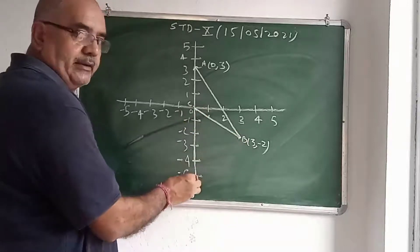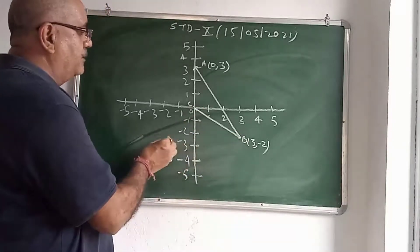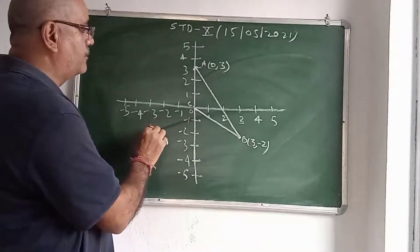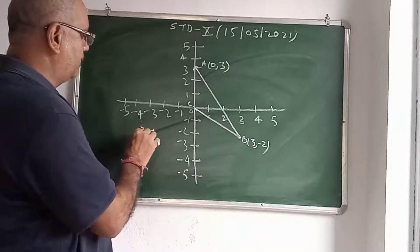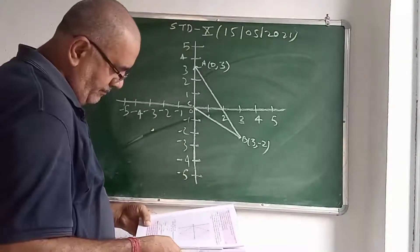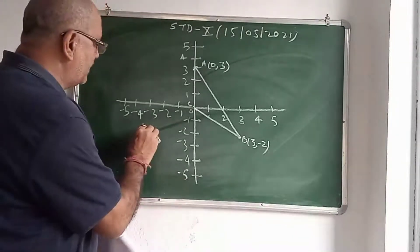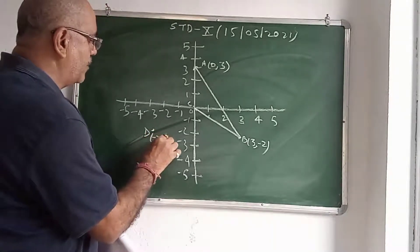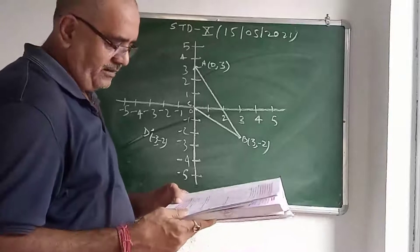This is the y-axis. So you have to reflect this point B in this y-axis. Then, this is 3 minus 2. It will come here. This point. What name is given? This is given D. And this is minus 3 minus 2. D is minus 3 minus 2.